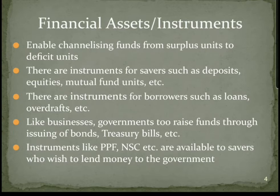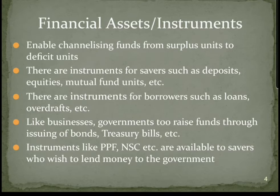Financial assets and instruments enable channelizing funds from surplus units to deficit units. If I have a surplus amount of funds available which I don't require, but there are people in the economy requiring those funds, they either issue bonds, mutual funds, or shares. By buying those shares and bonds, my surplus funds are transferred to the deficit area — those who need it — and in return I receive the financial instrument.